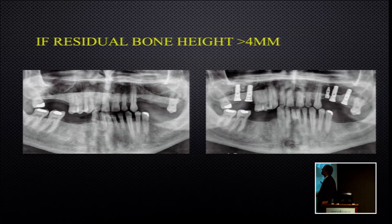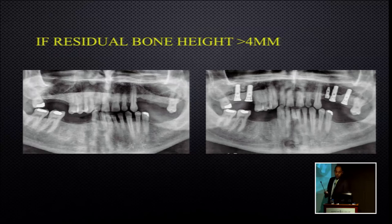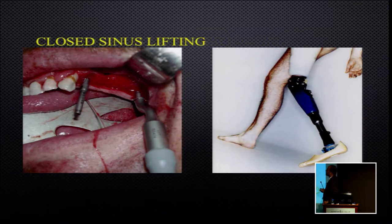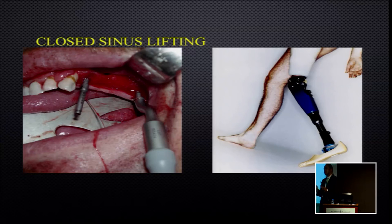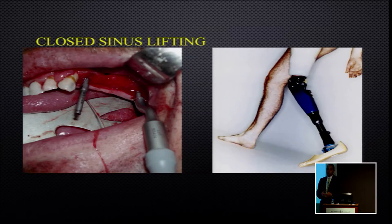Back to our protocol: if the residual bone height is more than 4 mm, we can place implants simultaneously with some sinus lifting. The first option is closed sinus lifting, but I consider this a crippled technique because it is blind — you cannot confirm the sinus is intact. If using particulate bone graft with closed sinus lifting and there is a small perforation, you cannot manage it; the bone will escape inside the sinus, resulting in an infected sinus requiring three to four months to resolve before proceeding again.